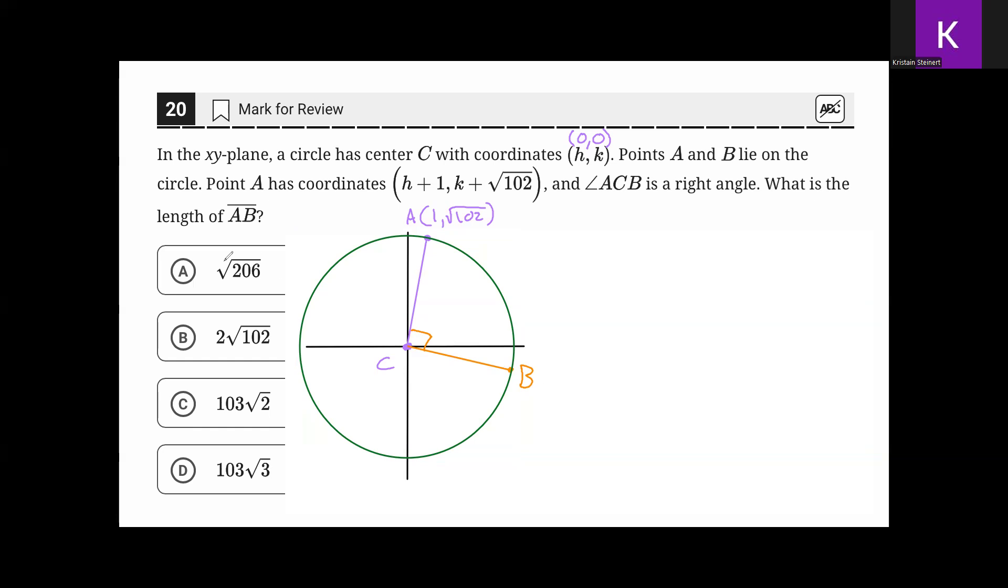To find the length of AC, we can use the distance formula. Distance formula is the square root of x2 minus x1 squared plus y2 minus y1 squared, where the two coordinates are going to be 0, 0 and 1, comma, the square root of 102.